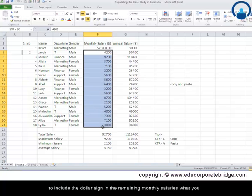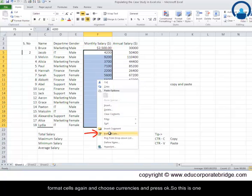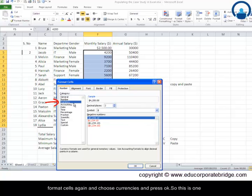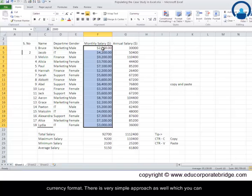However, now let's say you want to include the dollar signs in the remaining monthly salaries. What you can do is you can select this column at once and right-click and go to Format Cells again and choose currencies and press OK. So this is one kind of approach by which you can convert your regular numbers into currency formats.